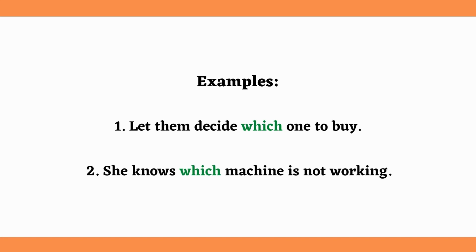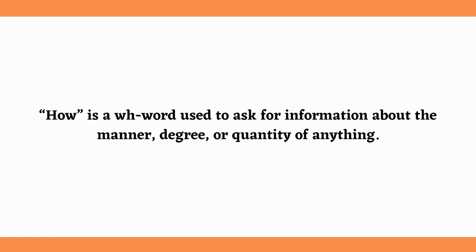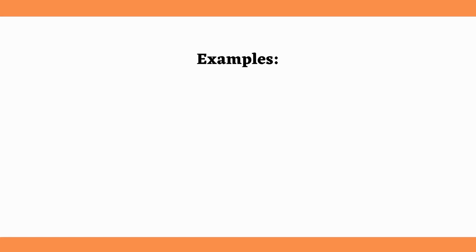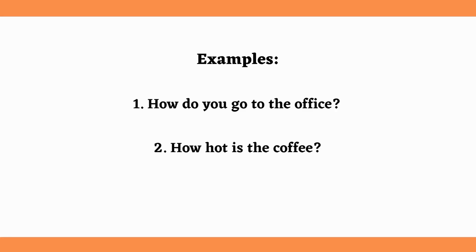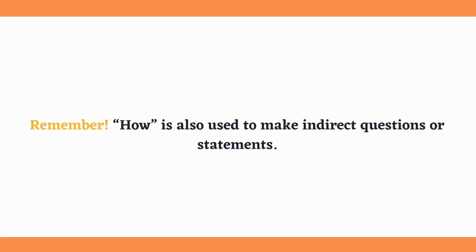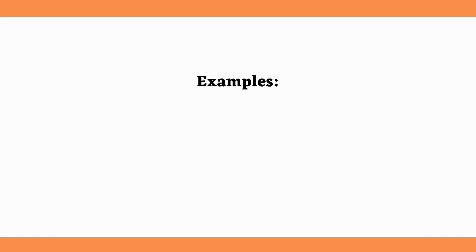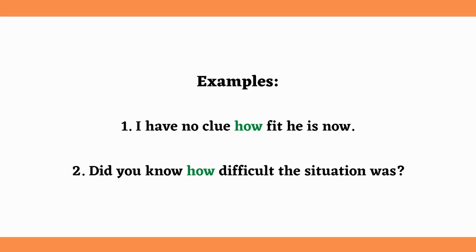Our last WH word is 'How.' 'How' is a WH word used to ask for information about the manner, degree, or quantity of anything. For example: How do you go to the office? How hot is the coffee? How old are you? Remember, 'how' is also used to make indirect questions or statements. For example: I have no clue how fit he is now. Did you know how difficult the situation was?